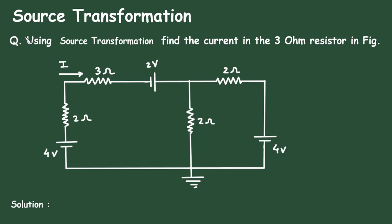Source transformation. Question: Using source transformation, find the current in the 3 ohm resistor in the figure. Here in this circuit, we have to find the current through this 3 ohm resistor by using source transformation.